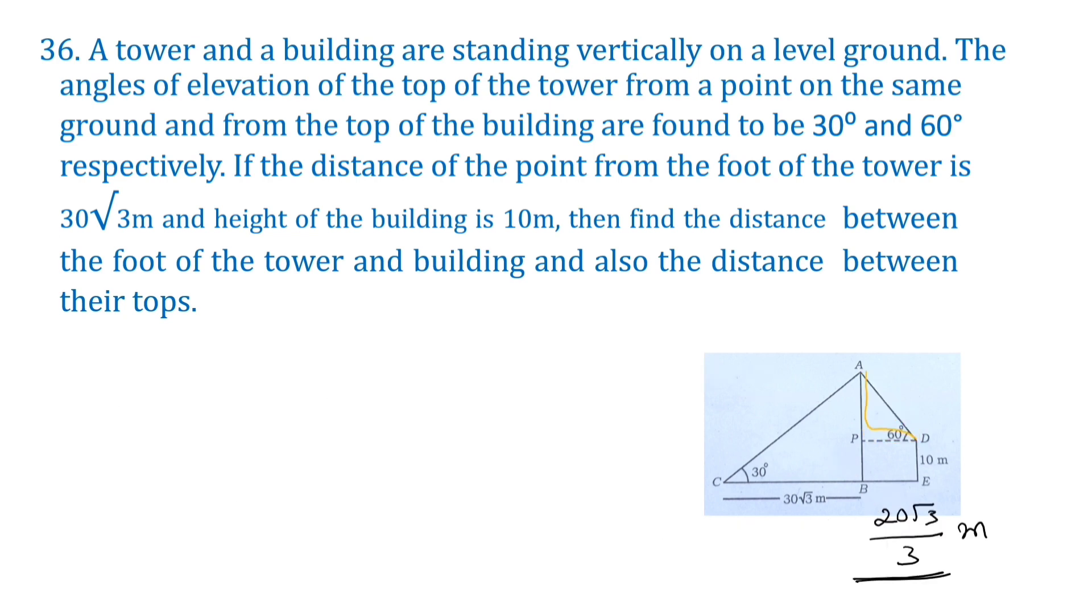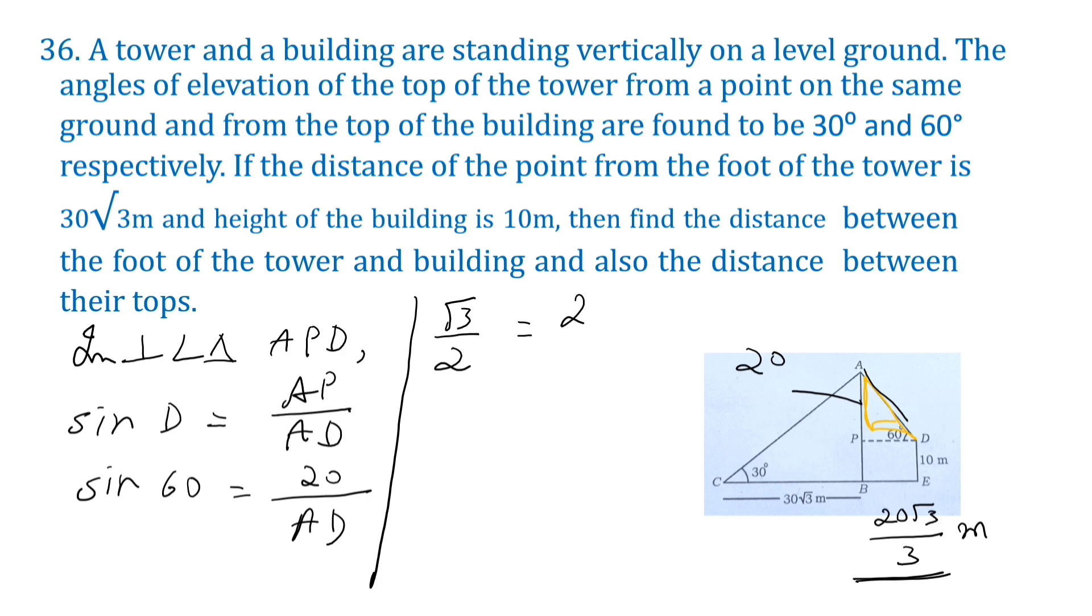Now in triangle APD, sin D is equal to AP by AD, opposite by hypotenuse. Here AP is 20 meters. Sin D is sin 60. AP is 20 meters. AD, we have to find AD. So sin 60 is root 3 by 2, equals 20 by AD.